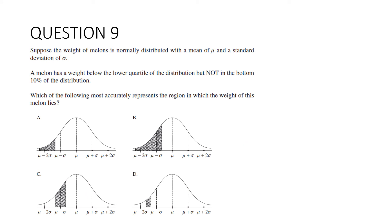Question 9: Suppose the weight of melons is normally distributed with a mean of mu and a standard deviation of sigma. The melon is a weight below the lower quartile of the distribution, but not in the bottom 10%. Which of the following most accurately represents the region in which the weight of this melon lies? Our lower quartile is 25%. So we want a region shaded between 10% up to 25%. Firstly, we can cut out A and B. If you have a look here, this in between two standard deviations of the mean is 95%.